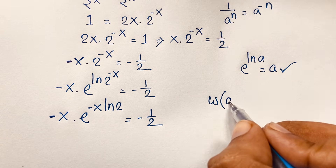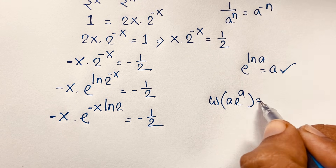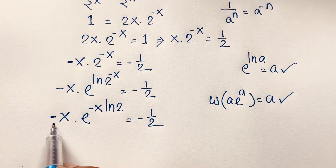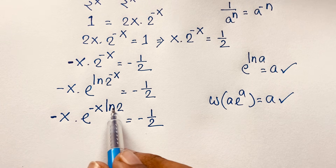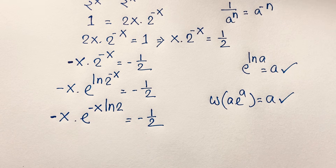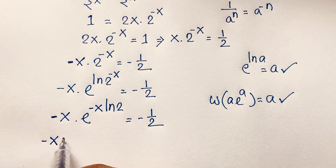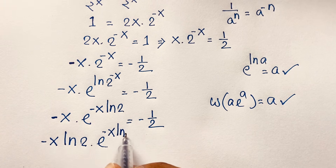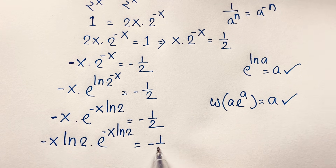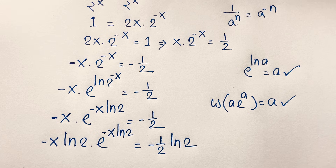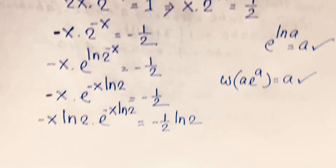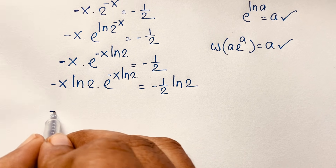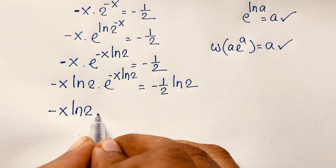We know the Lambert W function applies to expressions of the form a·e^a equals a. To match that form here, I need this and this to be the same. Since we have ln 2 inside the exponent, I multiply both sides by ln 2: minus x·ln2 times e to the power (−x·ln2) equals negative one half times ln 2.